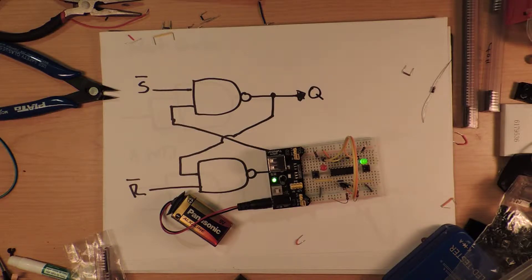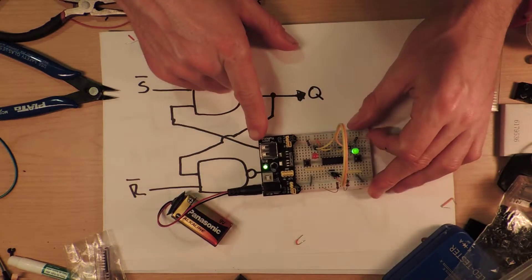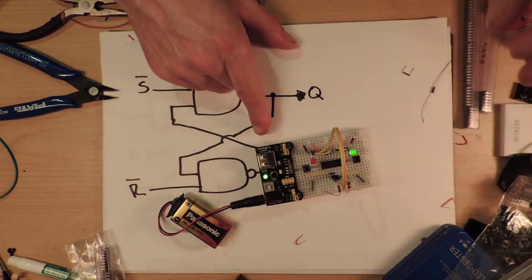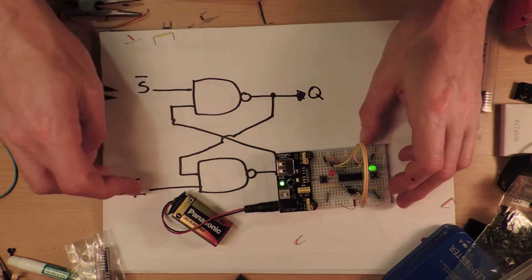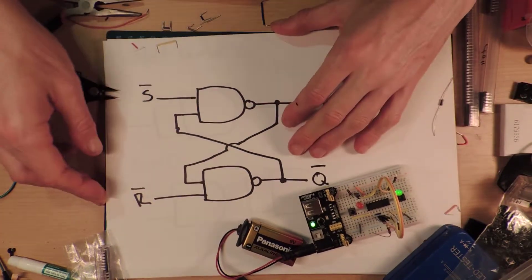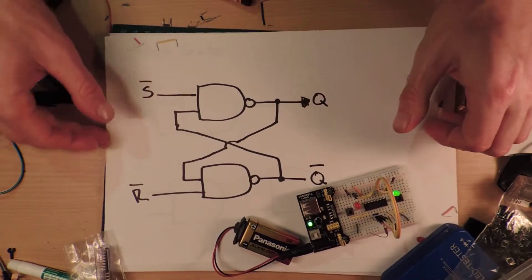And it says, according to my little guide here, that if you actually had them both high, that would be... sorry, they're both low inputs. So if both of these are low, it's a disallowed state. And you can kind of understand how this works.